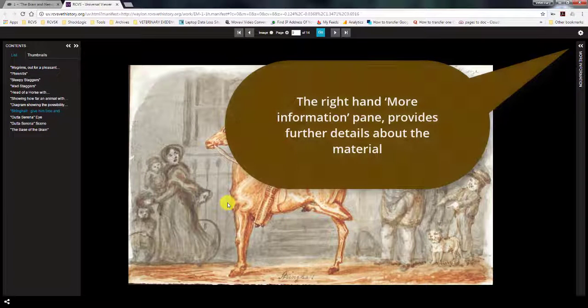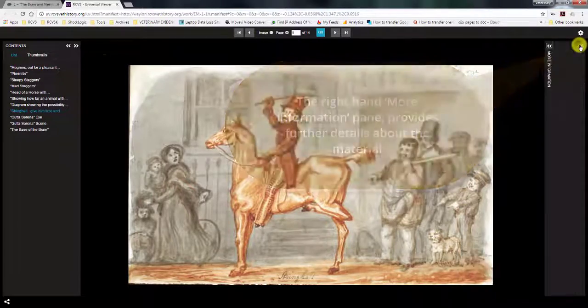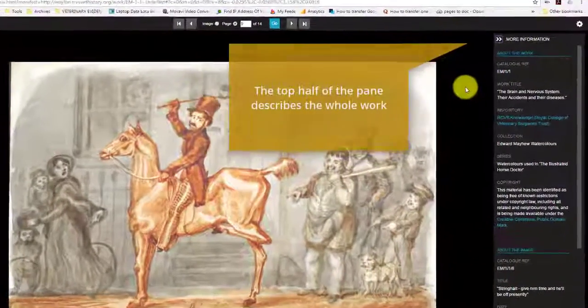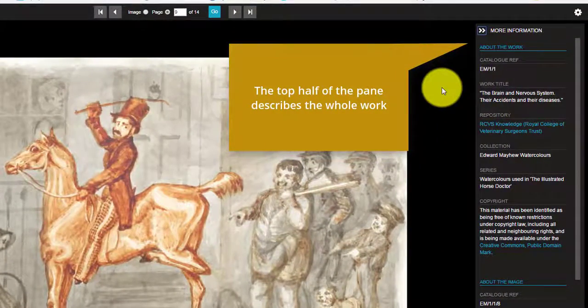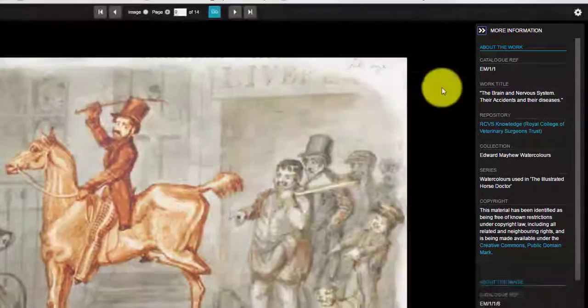The right hand more information pane provides further details about the material. The top half of the pane describes the whole work. The bottom half describes the specific article or artwork currently on display.